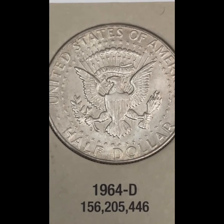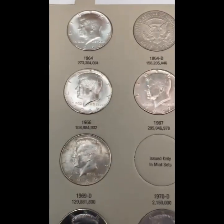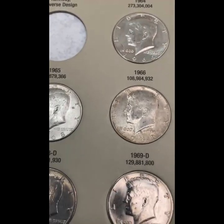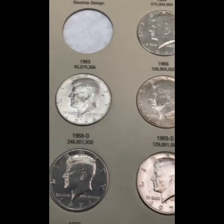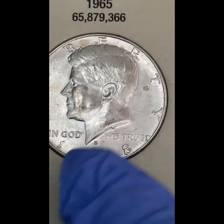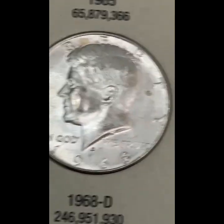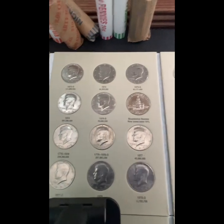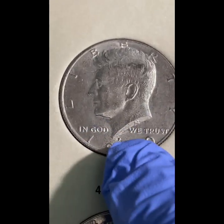From 1965 through 1967, there were no mint marks — those were all minted at Philadelphia. In 1968, the mint mark ('D' for Denver, 'S' for San Francisco, no mint mark for Philadelphia) was relocated to the obverse at the truncation of the bust. You can see the 1968 'D' for Denver mint mark there. Starting in 1980, the 'P' mint mark appeared on the half dollars.